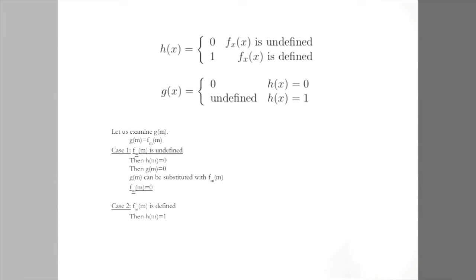Let us now look at cases where f sub m of m is defined. In such cases, h of m is 1 and g of m is undefined. g of m can then again be substituted with f sub m of m and f sub m of m is undefined. And again, we have contradicted ourselves. By showing that in all cases, assuming the existence of a function h that determines a process's decidability results in a self-contradiction, we have completed a proof by contradiction that h cannot exist.